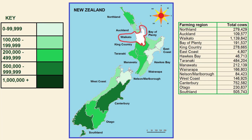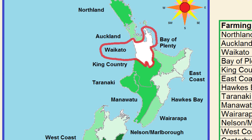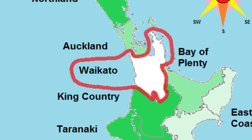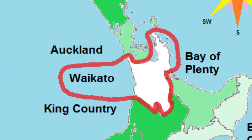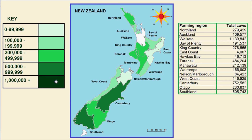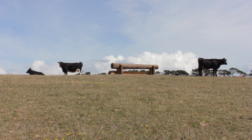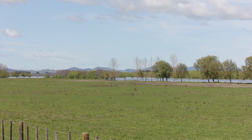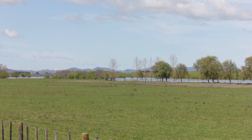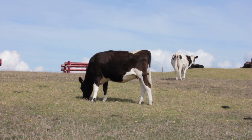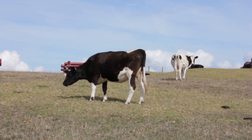And finally I will shade in the most popular dairy farming region in New Zealand, which is the Waikato region. This is going to be the darkest green color. This region is famous for its green rolling hills and ample rainfall, and really fertile alluvial soils, which is why dairy farming is so popular there.